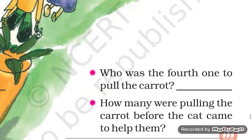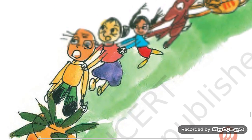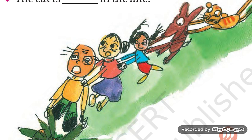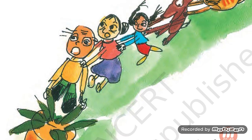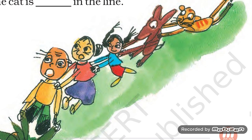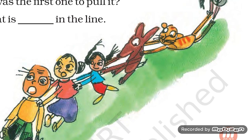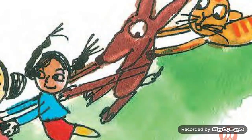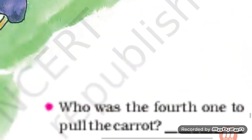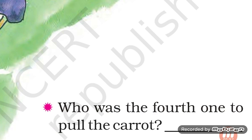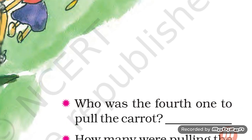Next question: Who was the fourth one to pull the carrot? Fourth number pe koon tha? Let's see — first one is the old man, second one is the old woman, third is the granddaughter, fourth is the brown dog. Yes, the answer is the dog was the fourth one to pull the carrot.